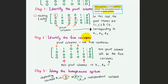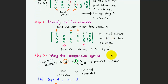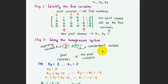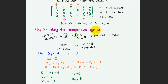The second step is to identify the free variables. The pivot columns are not free variables — they depend on other variables. The non-pivot columns, corresponding to x2 and x5, are the free variables. So we have identified that x2 and x5 are the free variables.